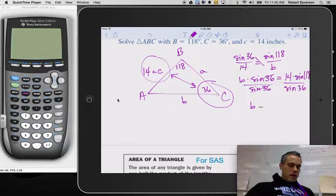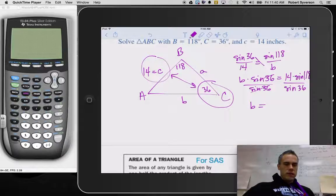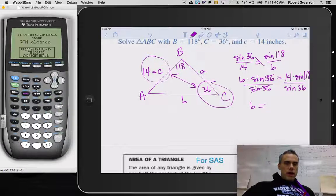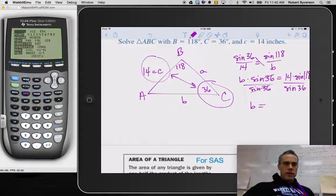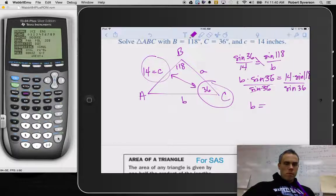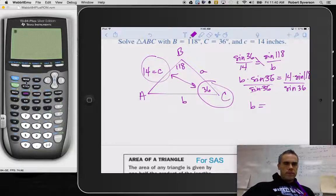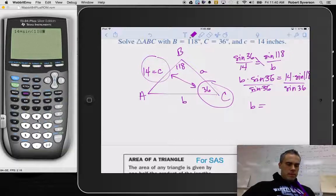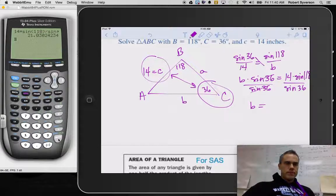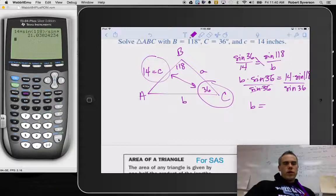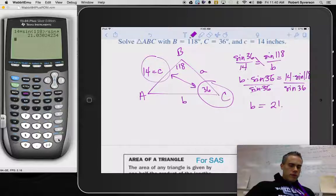So b, I'm going to go over to my graphing calculator here. And I'm going to make sure since I'm dealing with degrees that my mode is on degrees. And then I go ahead and type in 14 times the sine of 118 divided by the sine of 36. Enter. And we have an answer of 21.03.